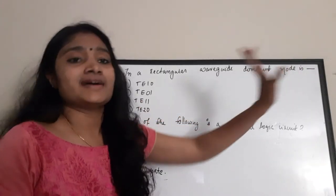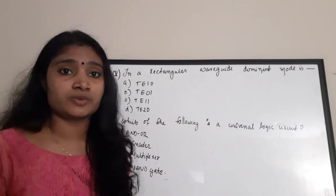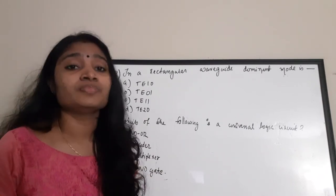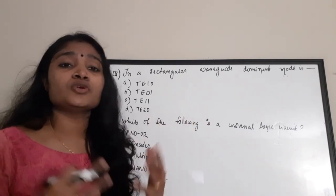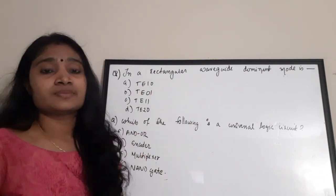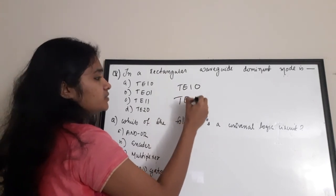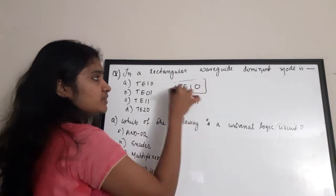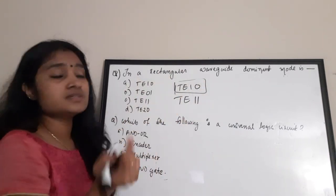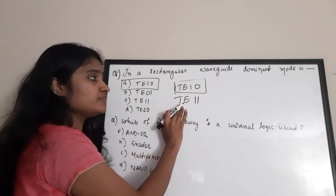Next question: in a rectangular waveguide, the dominant mode is what? A dominant mode is the mode with minimum cutoff frequency, minimum distortion, and supports more than one type of propagation. For rectangular waveguides, the dominant mode is TE10. For circular waveguides it is TE11. The correct answer is option A: TE10.